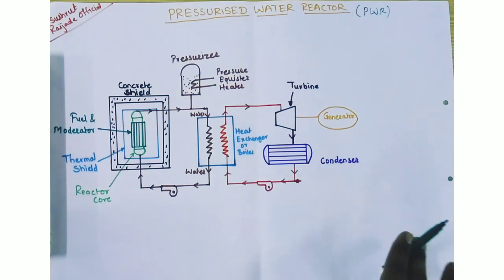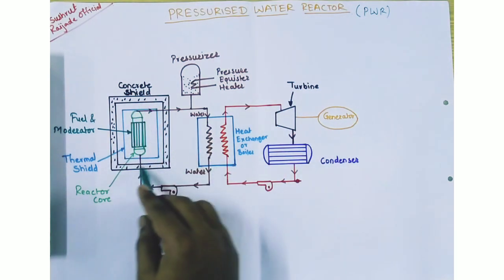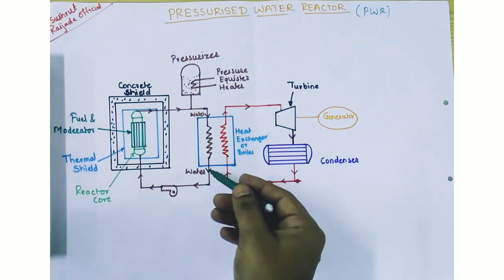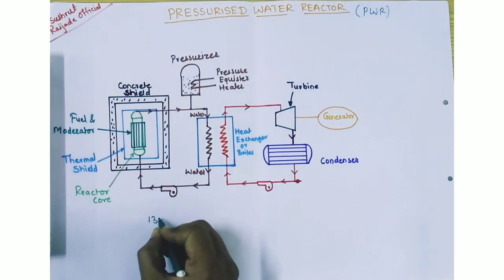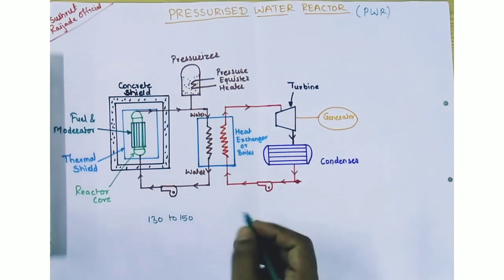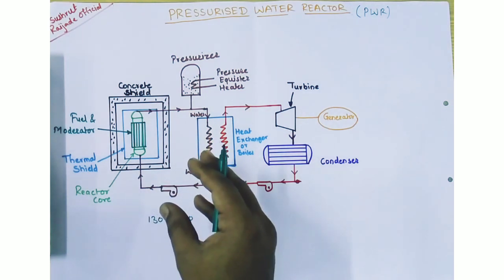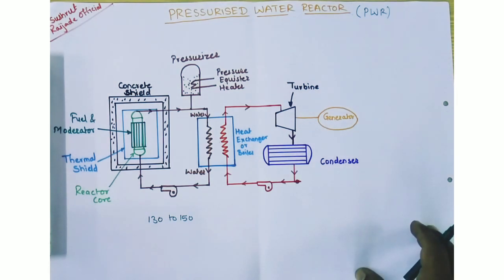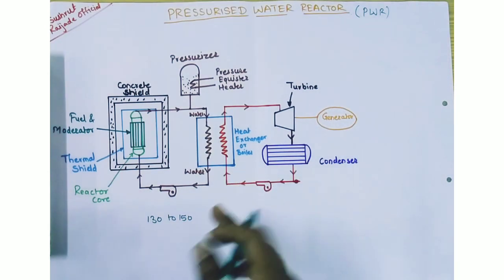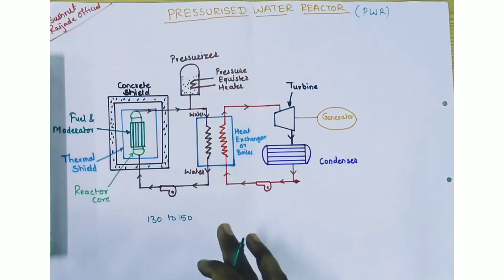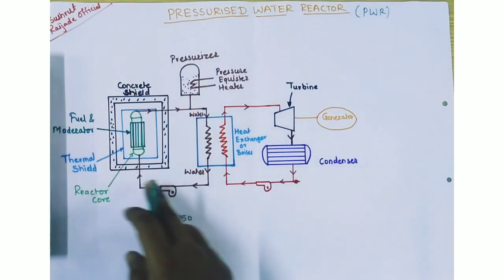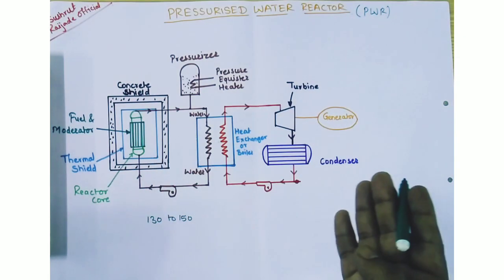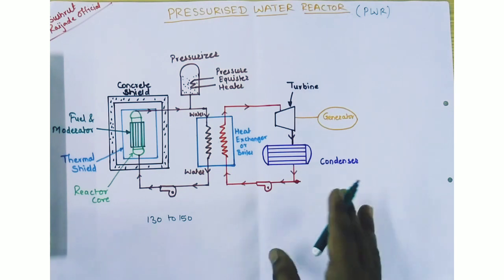This PWR consists of a concrete shield and thermal shield because PWR — pressurized water reactor — maintains coolant pressure up to 130 to 150 bar. This requires high-quality material that can withstand that pressure. The concrete shield and thermal shield ensure that radiation does not come out to the atmosphere, since radiation is hazardous to humans.